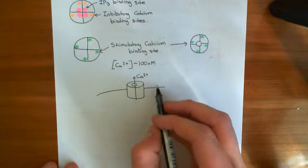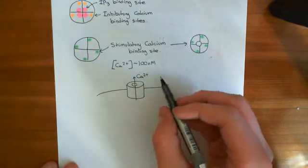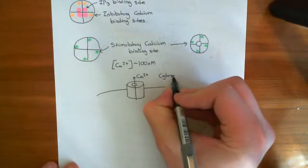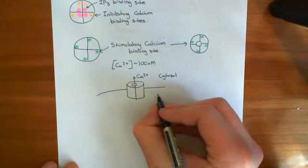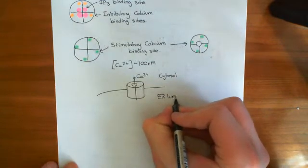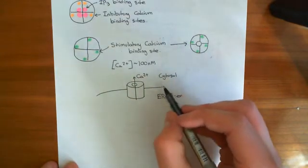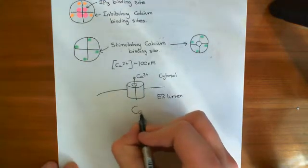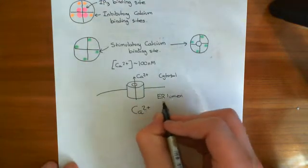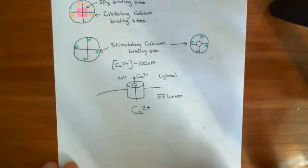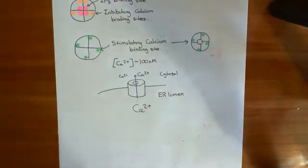There is no electrical potential difference across the ER membrane — the cytosol and the ER lumen have the same electrical potential. However, there is a large concentration gradient: calcium is high in the endoplasmic reticulum and low in the cytoplasm. So the concentration gradient favours movement of calcium out, and you do get a calcium current leaving the endoplasmic reticulum and going into the cytoplasm when you open these IP3 receptors.